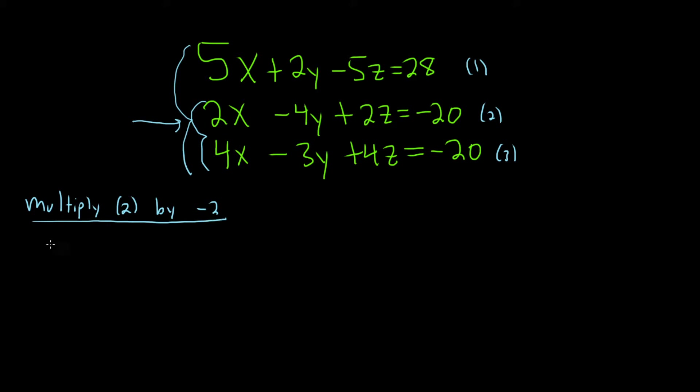Negative 2 times 2x is negative 4x. Negative 2 times negative 4y is positive 8y. Negative 2 times 2z is negative 4z. And negative 2 times negative 20 is positive 40.